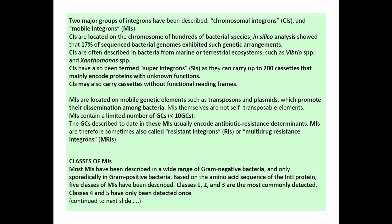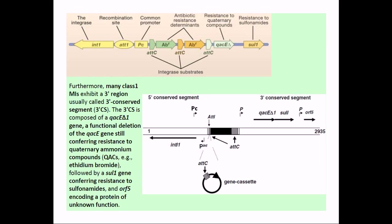Most mobile integrons have been described in a wide range of gram-negative bacteria and only sporadically in gram-positive bacteria. Based on the amino acid sequence of the integrase protein, five classes of mobile integrons have been described, from class 1 to class 5. Classes 1 to 3 are most commonly detected, while classes 4 and 5 have only been detected once, making them very rare.